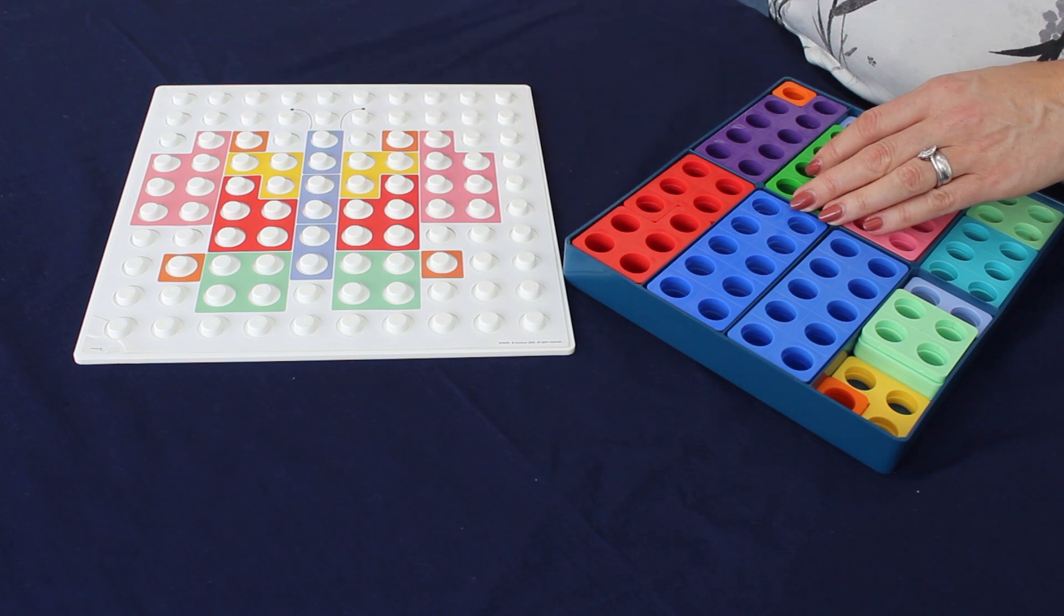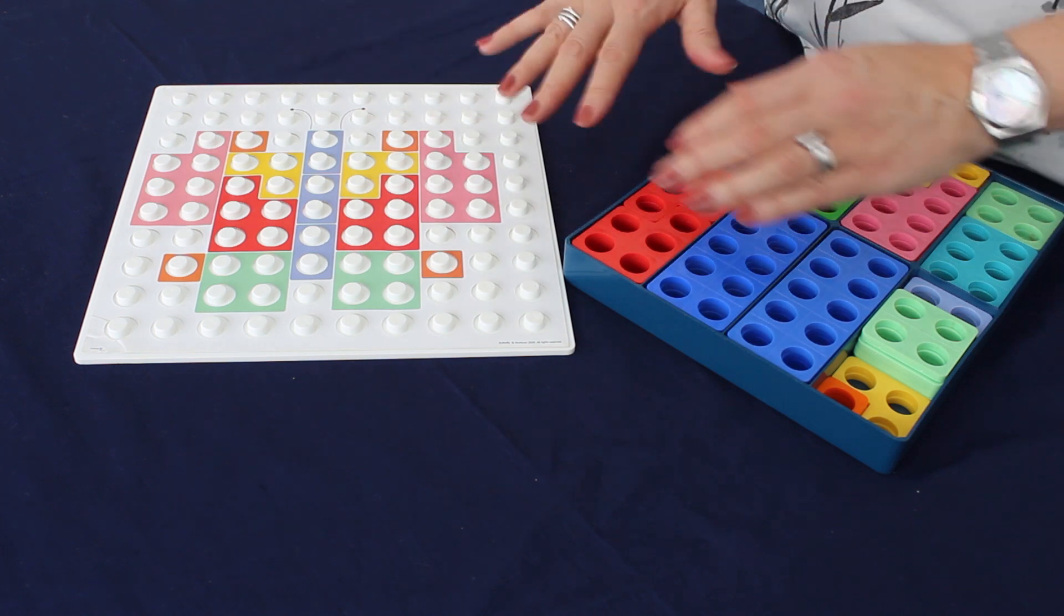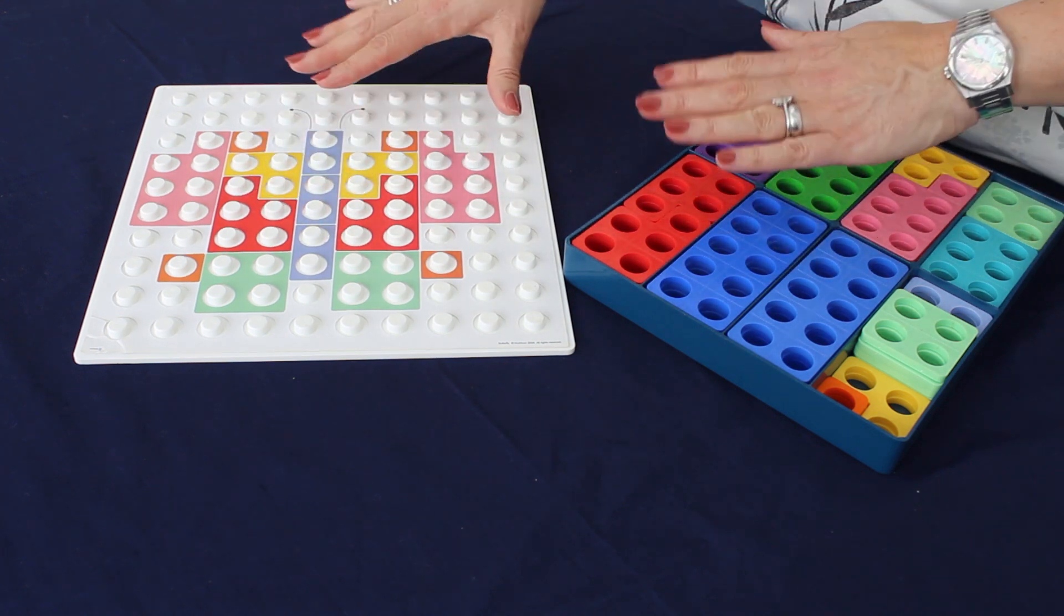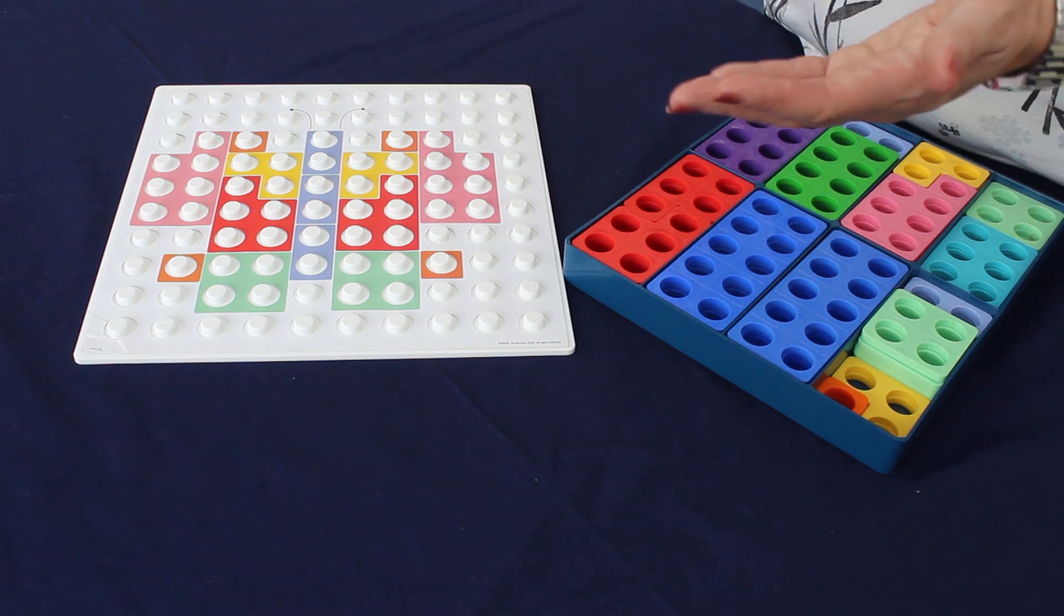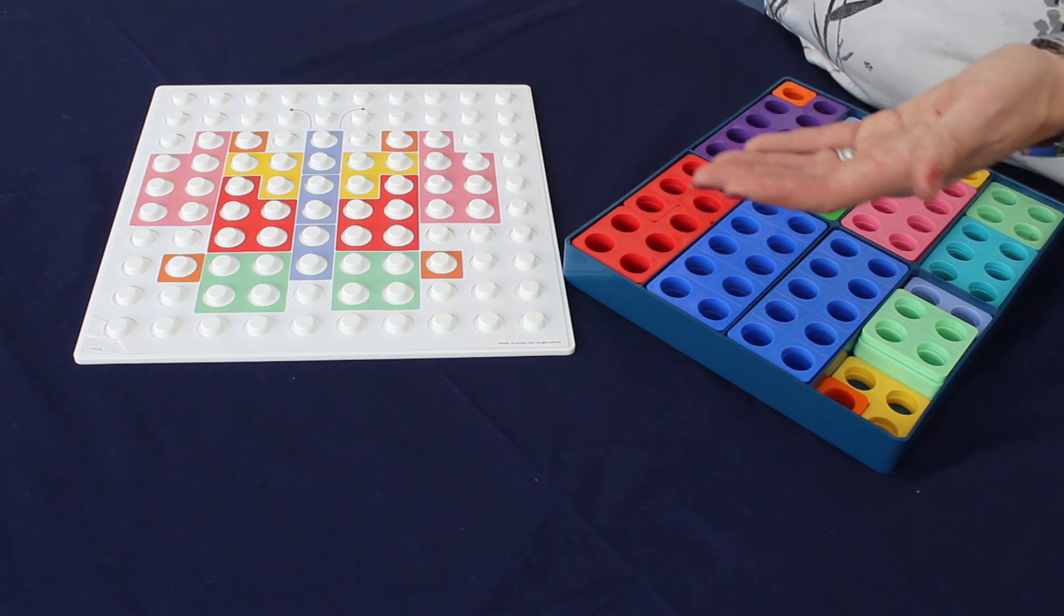The next stage would be to use a feely bag with the shapes that they have here, just the ones they need in a feely bag, and then you would introduce some extra shapes they didn't need again.